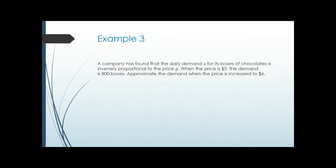Example three: a company has found that the daily demand x for its boxes of chocolates is inversely proportional to the price p. When the price is $5, the demand is 800 boxes. Approximate the demand when the price is increased to $6. Step one, reading left to right: demand is x, 'is' is the equal sign, 'inversely proportional' gives us k, and 'inversely' tells us the price p goes in the denominator. So x equals k over p.